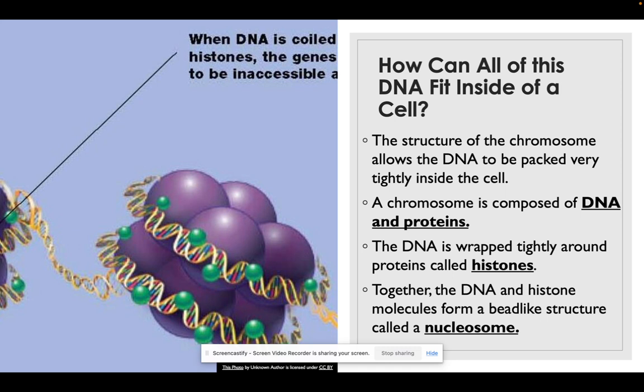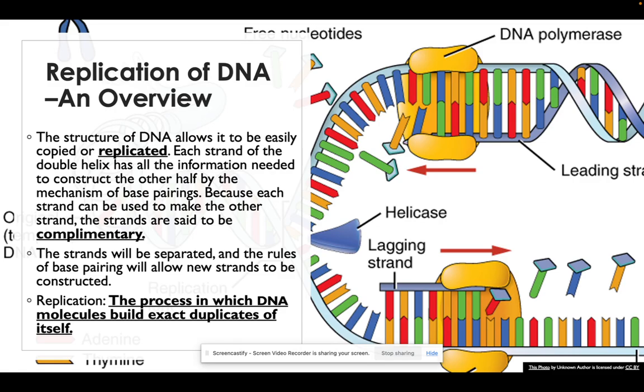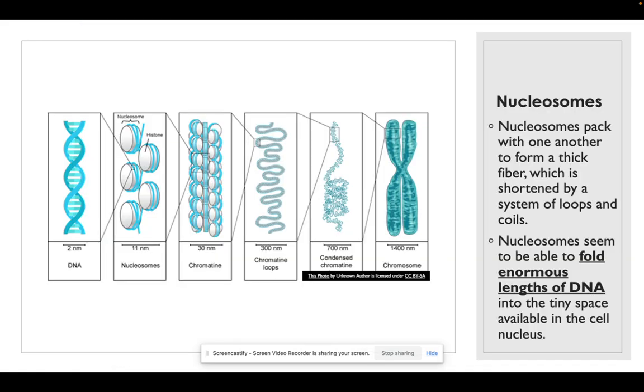So how can it all fit inside of a cell? How can all that DNA fit inside a cell? It's a great question. The structure of the chromosome allows DNA to be packed very tightly. A chromosome is composed of DNA and proteins. The DNA is wrapped tightly around these tiny proteins called histones. Together, the DNA and the histone molecule form a bead-like structure called a nucleosome. Now nucleosomes pack together with one another to form a thick fibrous rope which is shortened by a system of loops and coils. You can really see that on the left-hand side here. Nucleosomes will fold enormous lengths of DNA into tiny spaces available and create what we know as the chromosome.